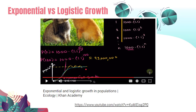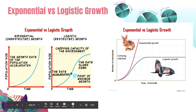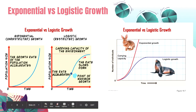To understand exponential and logistic growth better, I recommend watching the Khan Academy video on this topic — I'll provide the link in the description below. In summary: exponential growth with unlimited resources produces a J-shaped curve where the population accelerates. Once the population meets the carrying capacity, it shifts to a more S-shaped logistic curve where the growth rate slows down and the population stabilizes around the carrying capacity.